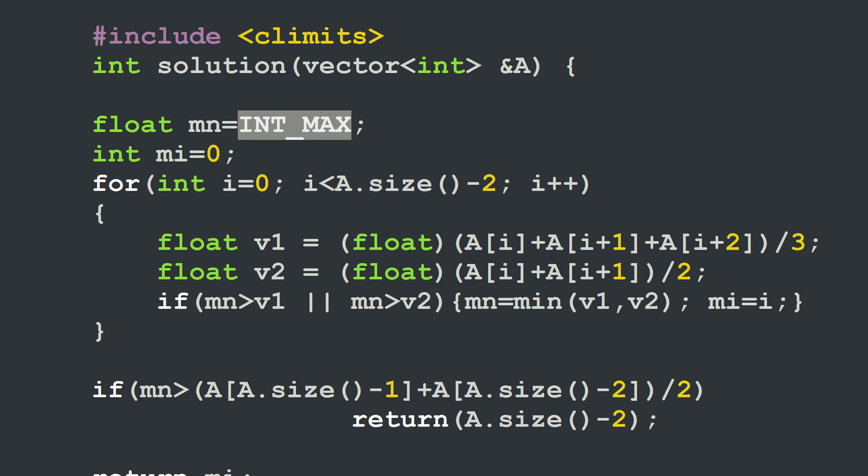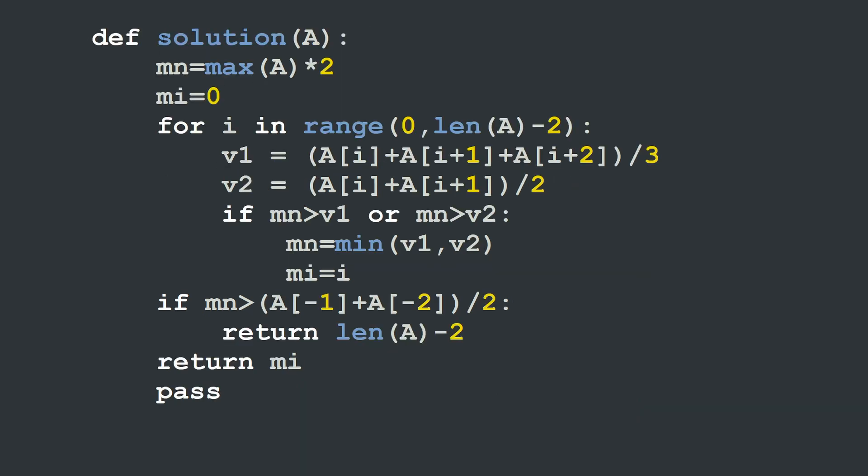In Python, it looks a bit more elegant. So we start with our solution function. It takes a list a, where we have our provided array. Then I'm going to start by declaring the variable minimum, mn, which is equal to the maximum value of a times two. This is something randomly chosen just to have a high value as a start. Then the index of the current slice is going to be stored in the variable mi, just like in the C++, mi equal to zero as a start. Then I'm going to apply my for loop for an index i going between zero and the length of a minus two. And the minus two is because we're going to use elements a i plus two. So we don't want to exceed the size of the list. We're going to stop at length of a minus two.